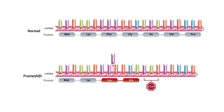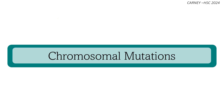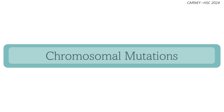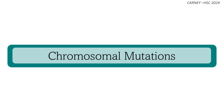A deletion is when a base pair is removed from the DNA sequence, which will also cause a frameshift mutation with similar disruptive effects on the protein. In this example, uracil has been deleted from the mRNA sequence. Just like with the insertion, this has a knock-on effect in polypeptide synthesis, whereby different amino acids are produced, resulting in a frameshift.